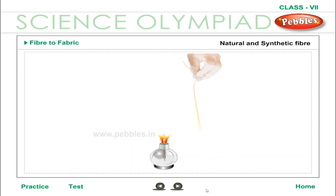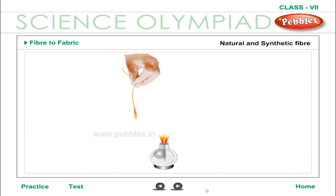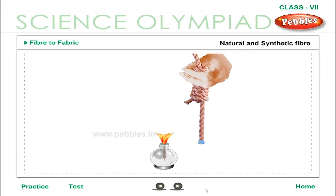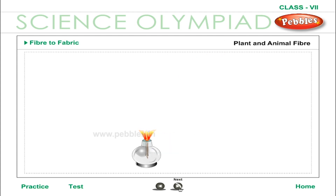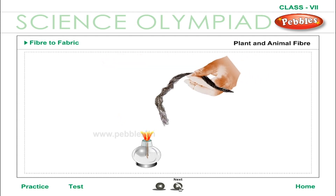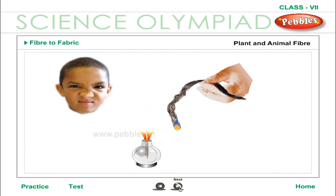Natural fiber vs synthetic fiber experiment: take a small piece each of two fibers and burn them. You will notice that natural fibers burn with a flame, while synthetic fibers melt fast and then burn. Also, burn a piece of sewing thread (plant fiber) and a piece of wool (animal fiber). The smoke from the sewing thread smells like burning paper because it is made of cellulose. The smoke from wool smells like burning eggs or pulses because it is made of proteins.